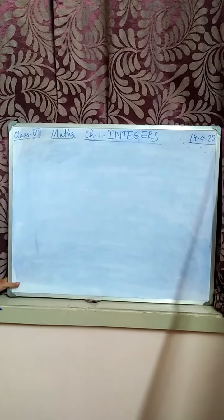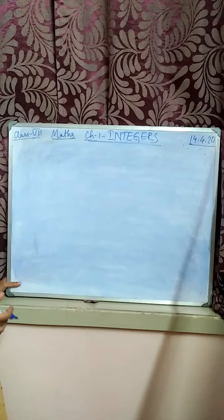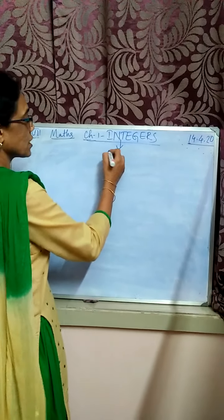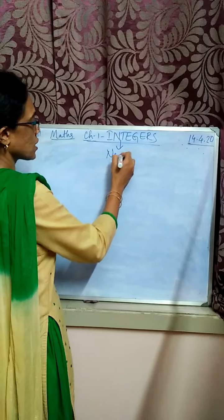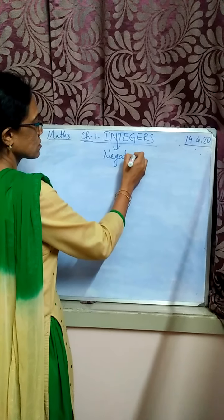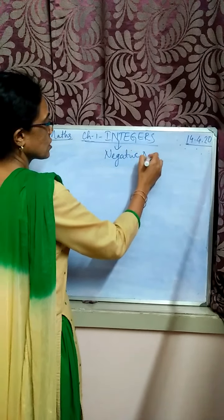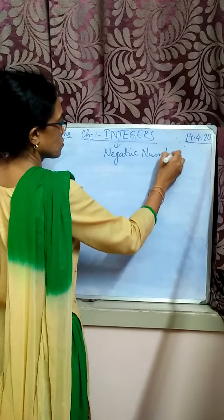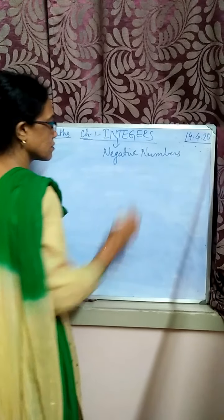Now you must have studied about integers in your last class. Have you studied in class 6? You must have studied. Integers are also called negative numbers. Why are they called negative numbers? Negative numbers.